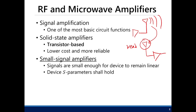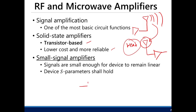So a weak signal needs to be amplified so we are able to demodulate it. Amplifier design is transistor-based, so you can be flexible, and it has lower cost and is more reliable than using an operational amplifier.